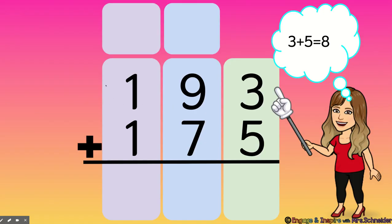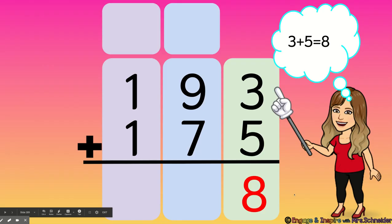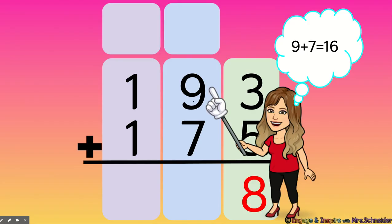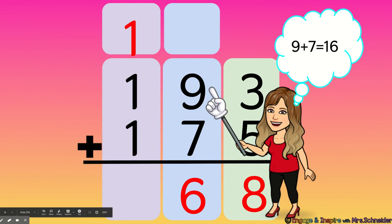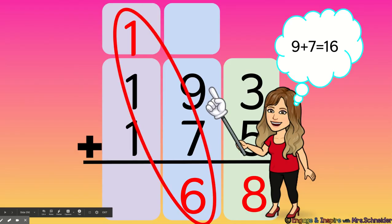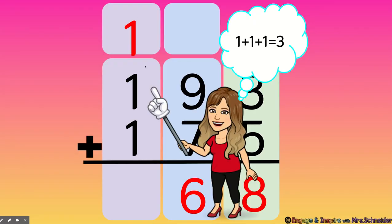One last time — I promise this is the last one. 193 plus 175. We're going to start on the right. Three plus five is eight — that's it, just eight. It's not 18; we didn't have to carry anything. It's just eight ones. Then we go to our tens place: nine plus seven equals 16, so nine tens plus seven tens equals 16 tens. Remember, 16 tens is the same as 100 and six tens, so we leave the six down here and carry the one — that's 16. Now we add our hundreds: one, two, three — three hundreds. So 193 plus 175 equals 368.